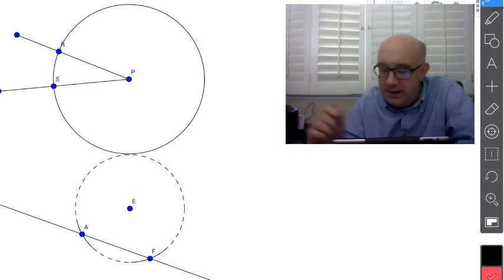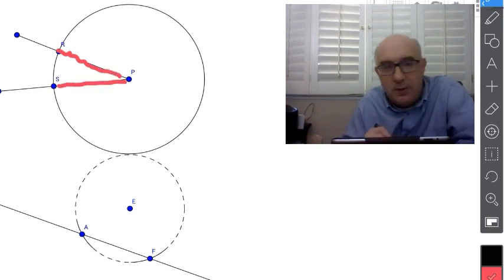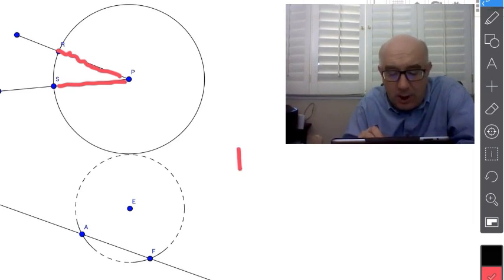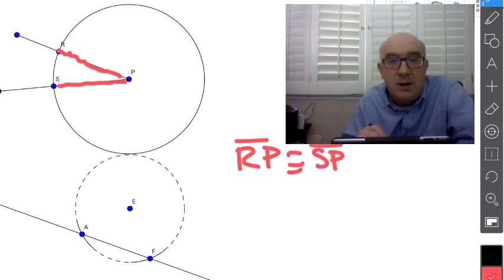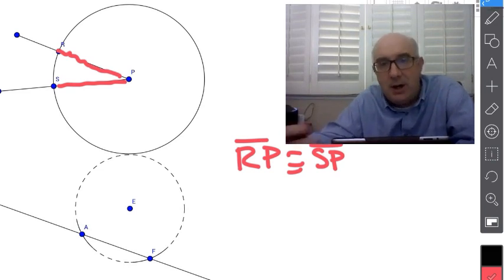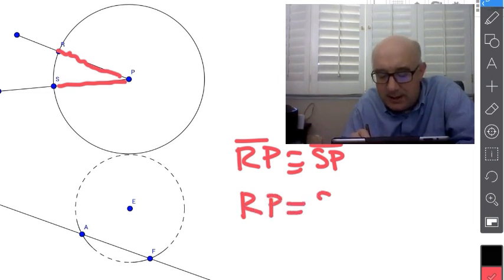So like in my example here, you can see this radius here and this radius here. Those two must be equal. So that would allow me to say RP is congruent to SP. Now that's a statement of congruence and then all I have to do is convert that to equality. RP then is equal to SP.